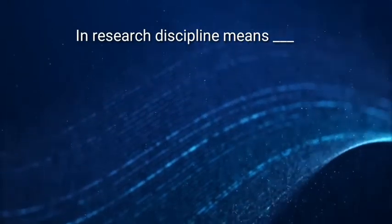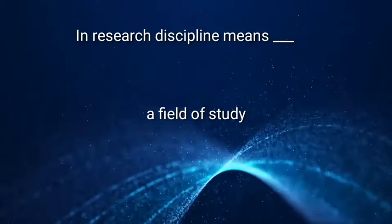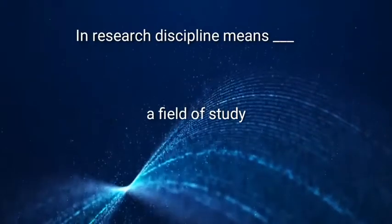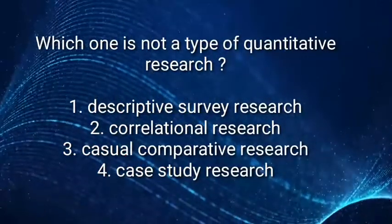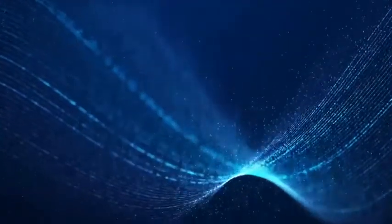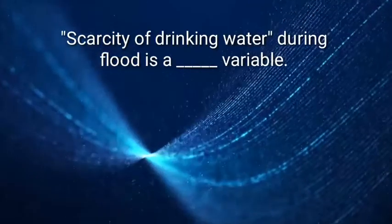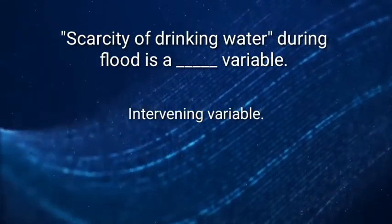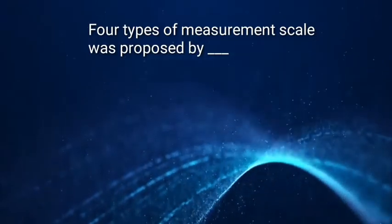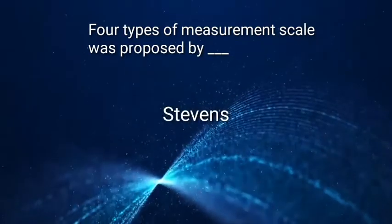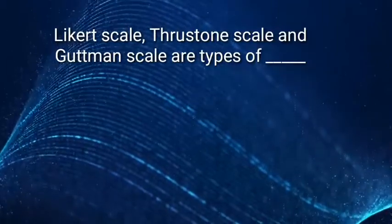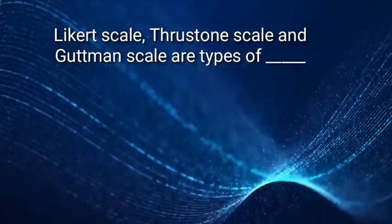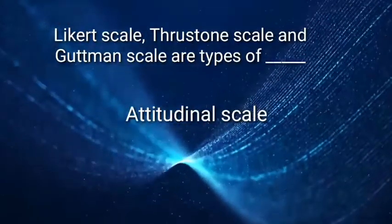Research discipline means a field of study — that will be the right answer. Which one is not a type of quantitative research? The right answer will be case study. Scarcity of drinking water affecting blood is an example of an intervening variable. Four types of measurement scale were proposed by Stevens. Likert scale, Thurstone scale, and Guttman scale are types of attitudinal scale.